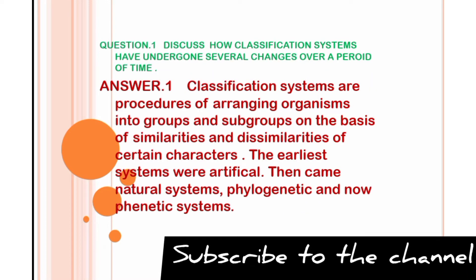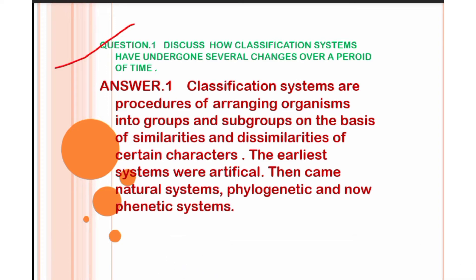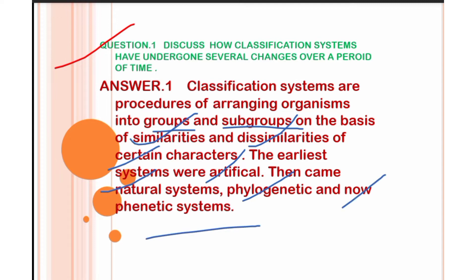Our first question is: discuss how classification systems have undergone several changes over a period of time. Classification system is a procedure of arranging organisms into groups or subgroups on the basis of similarities and dissimilarities of certain characters. Initially there was an artificial system, then came the natural system, then the phylogenetic system that involved evolutionary evidence, and now the phenetic system.